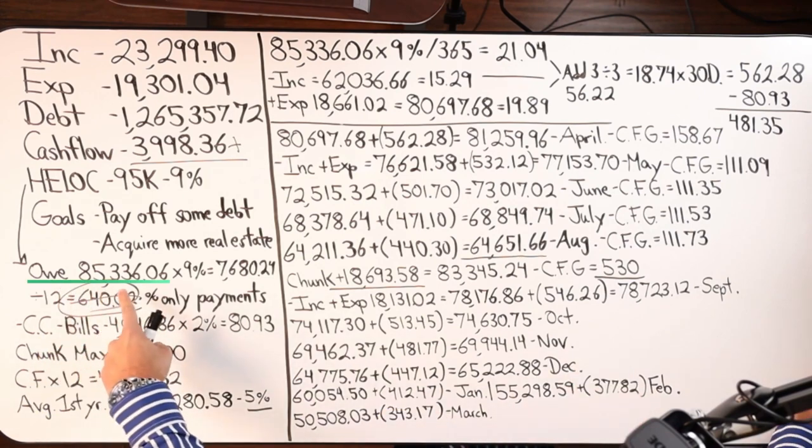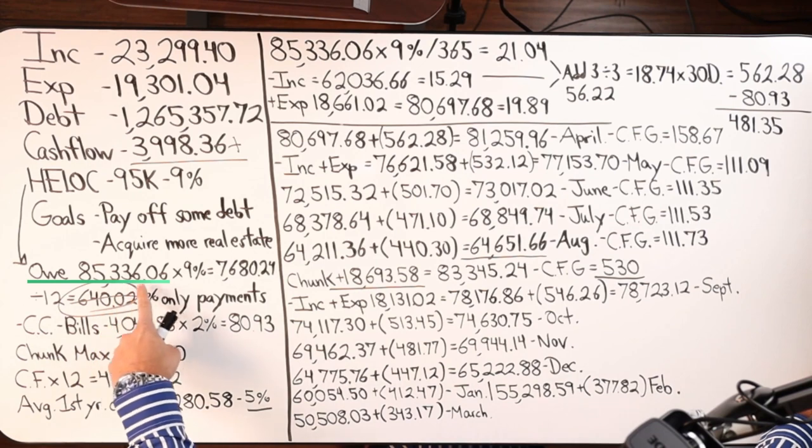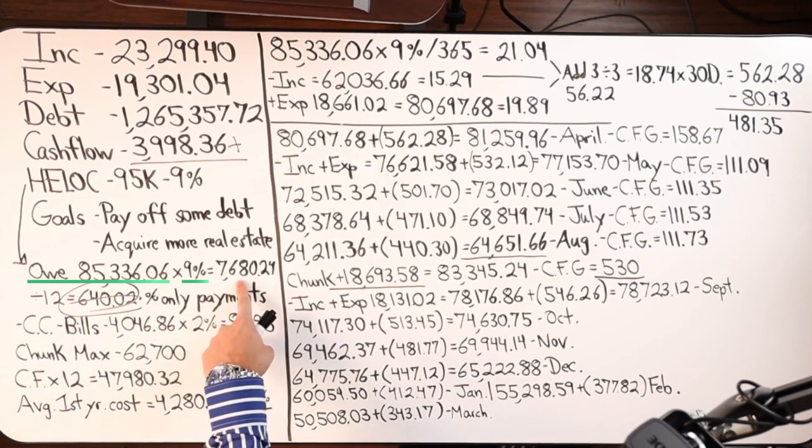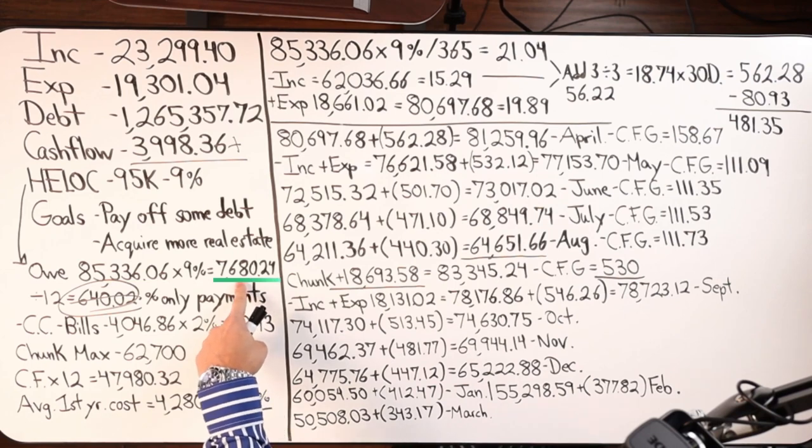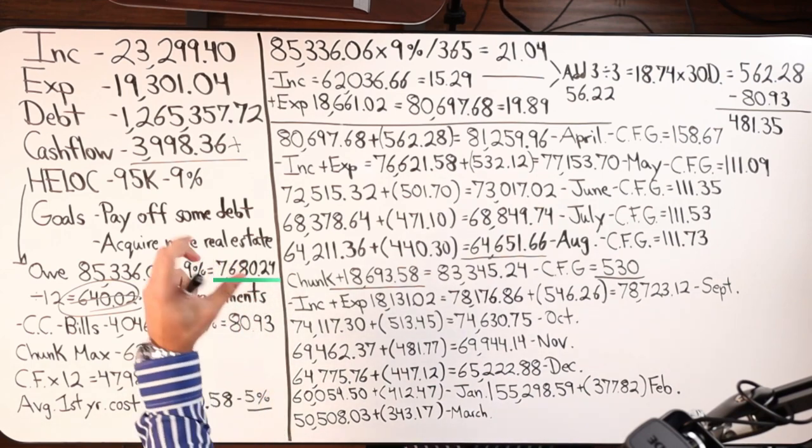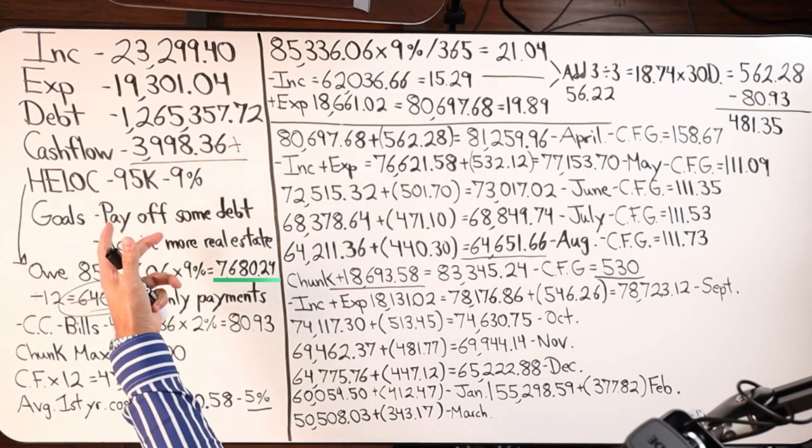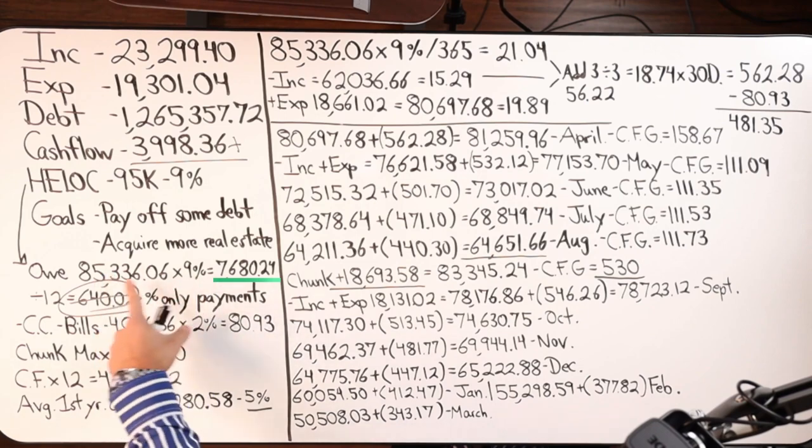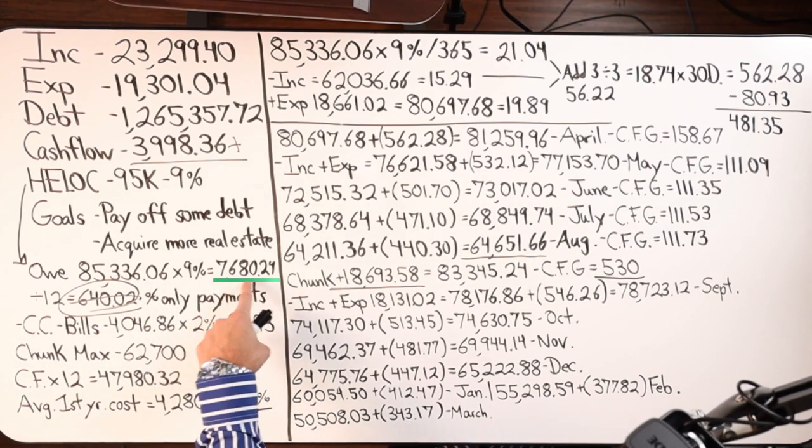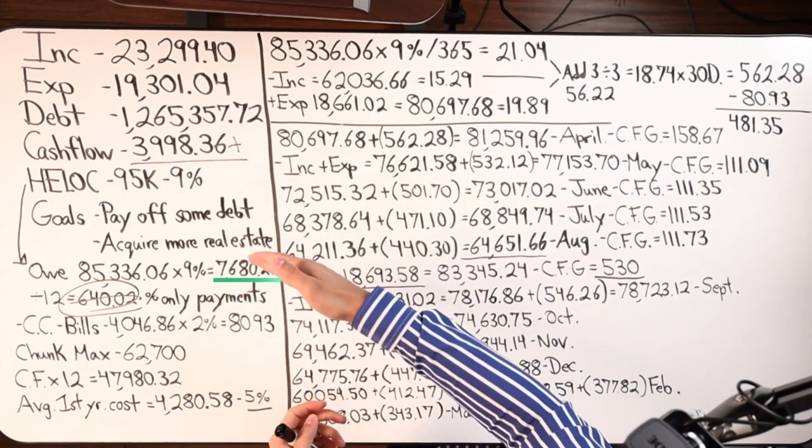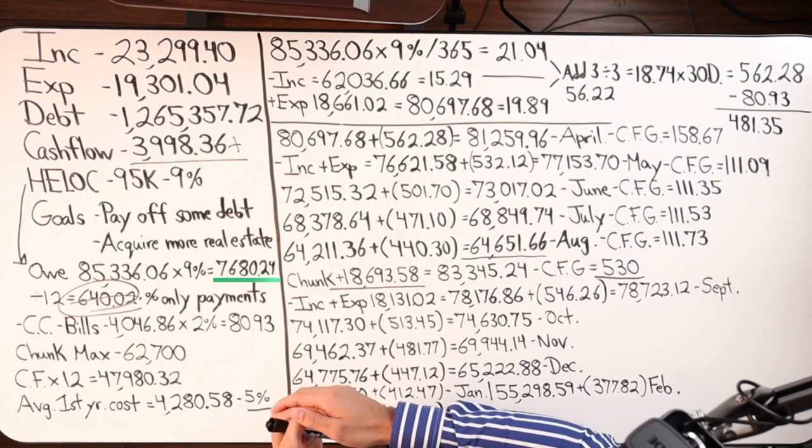So at 85,000 owed, $85,336.06 owed on the line, times that by 9%, here is your number, $7,680.24. Write that down in your notes. You can also plug in your own numbers with your own debt tool with however much you owe on your tool, times it by whatever the rate is. That's your number. This is the most amount of interest you could possibly pay in a 12 month period. So the goal is to reduce that number as much as humanly possible.